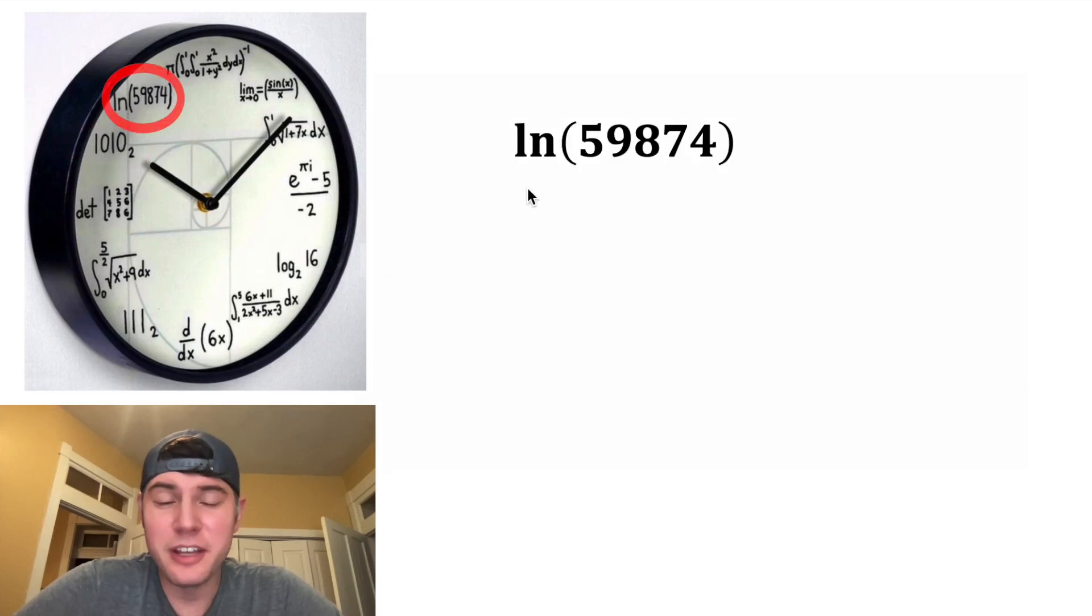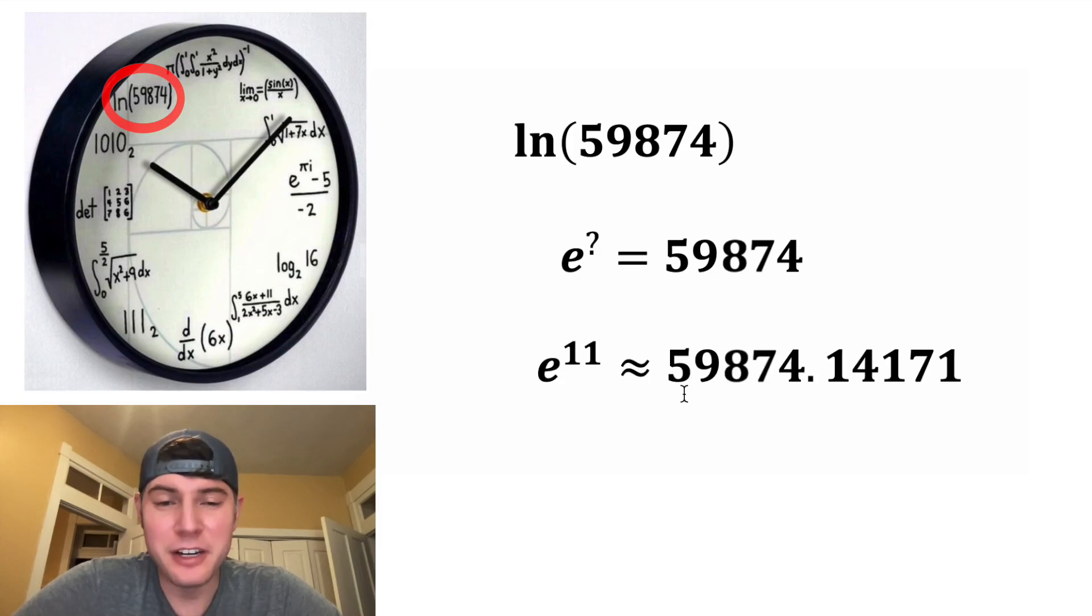For the 11 o'clock hour, they have the natural log of 59,874. I don't think this is going to be exactly 11. The natural log of a number means e to what power is 59,874. And e to the 11th power is approximately 59,874 and off by a little bit. So once again, not exact, but it's pretty close. So this thing is approximately equal to 11.